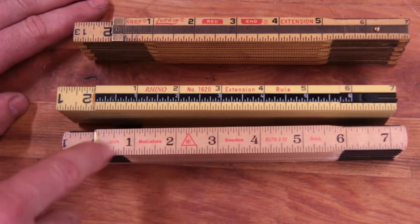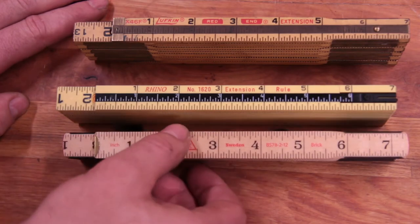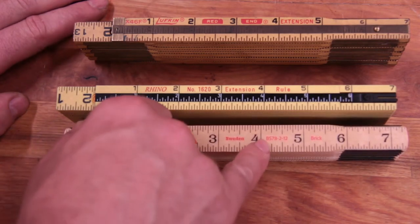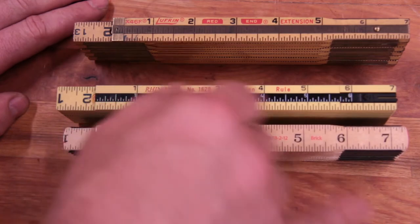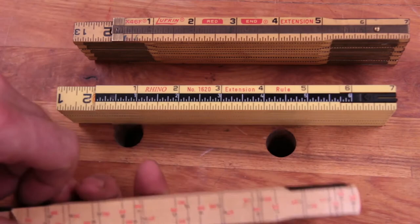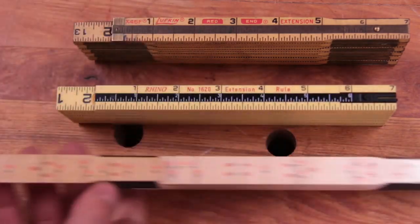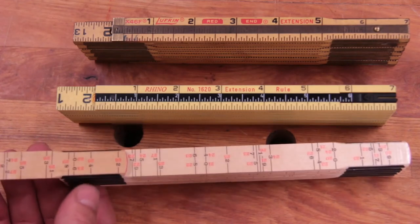One thing about this though is I ordered it off of Amazon, and it took like a month to come. And they sent me the wrong one. This is the brick scale 78 inch one. And like I said, I don't know how to use the brick scale, so this back side of the ruler is all gibberish to me.